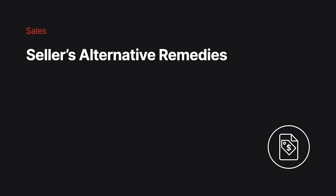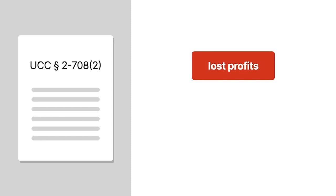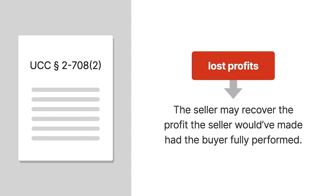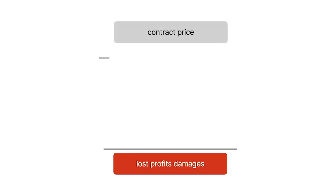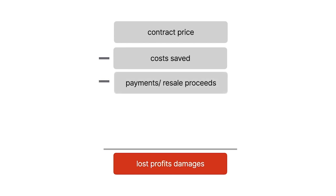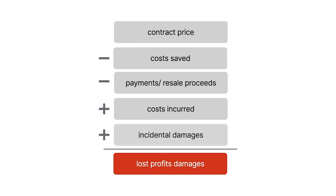In those cases, Article 2 may allow the seller to recover as damages either the seller's lost profits or the contract price. In appropriate cases, Article 2 allows the seller to recover the profit the seller would have made had the buyer fully performed. These damages equal the contract price minus costs saved by the seller due to the breach and any payments or resale proceeds, plus any costs reasonably incurred by the seller and incidental damages.